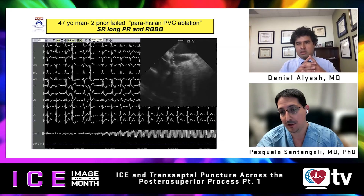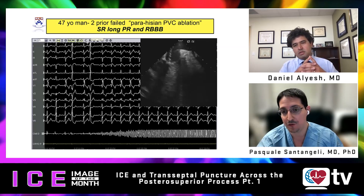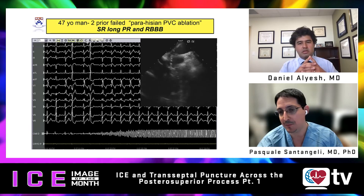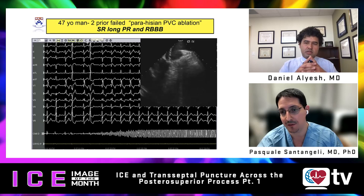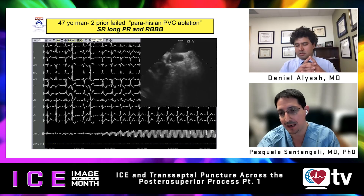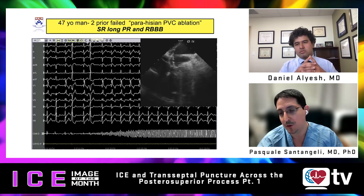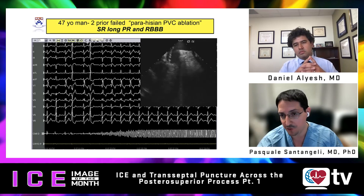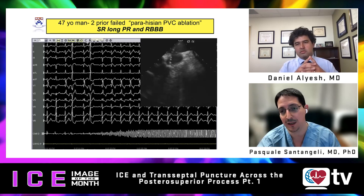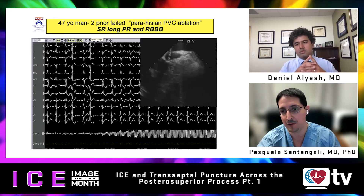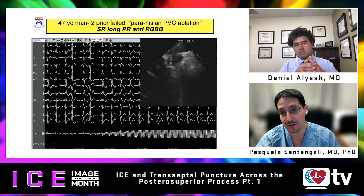When ablating from within the coronary sinus — between the ostium and the middle cardiac vein — you are targeting the epicardial aspect of the mitral annulus, not the PSP. In this ICE view, though the coronary sinus is visible, the catheter is actually slightly outside it, targeting the right atrial aspect of the posterior superior process of the left ventricle.